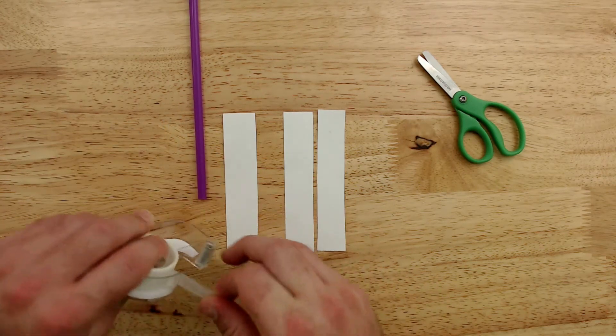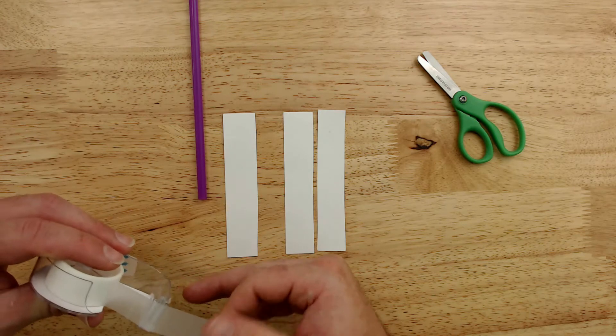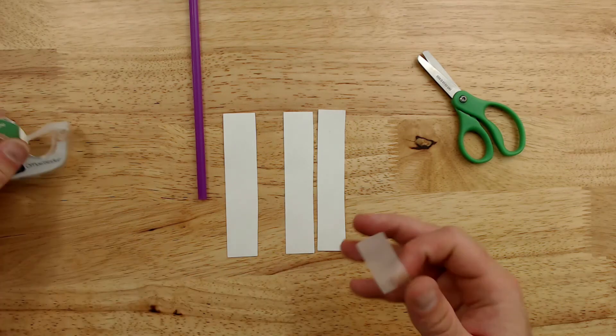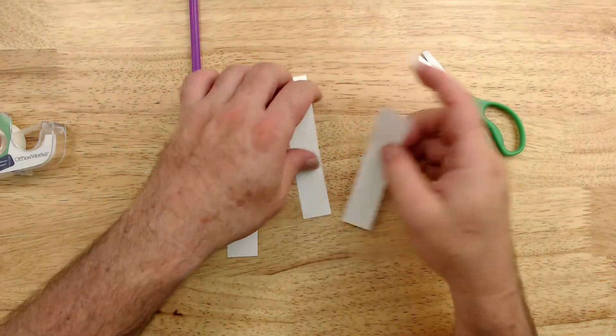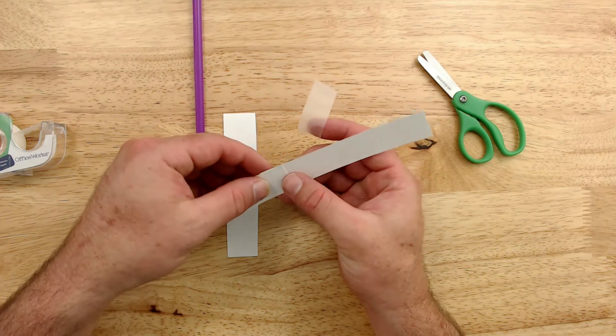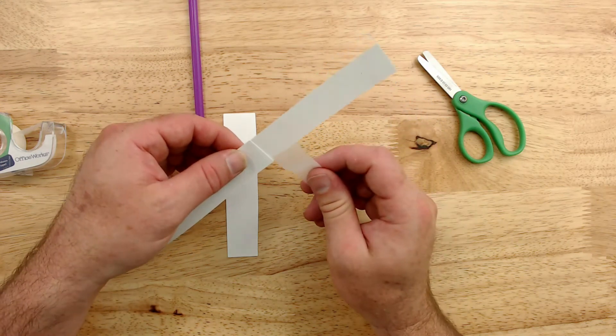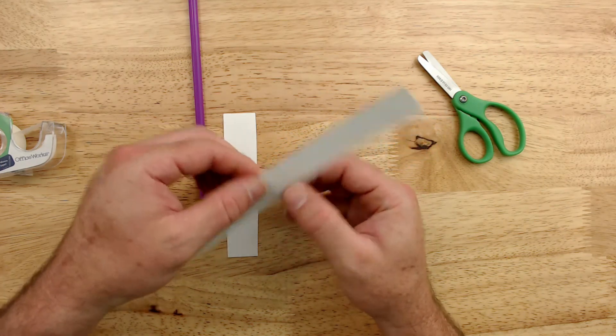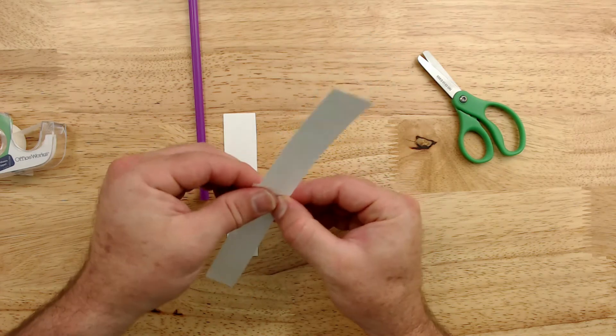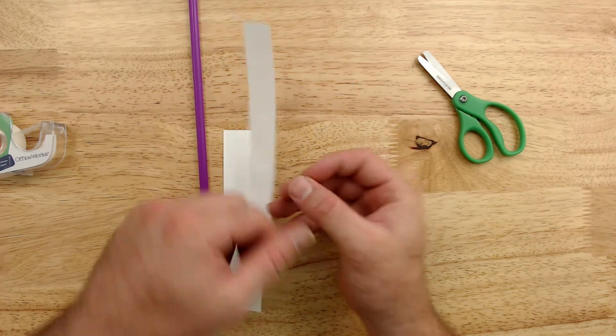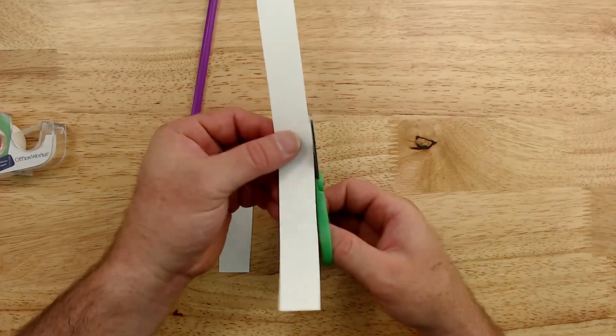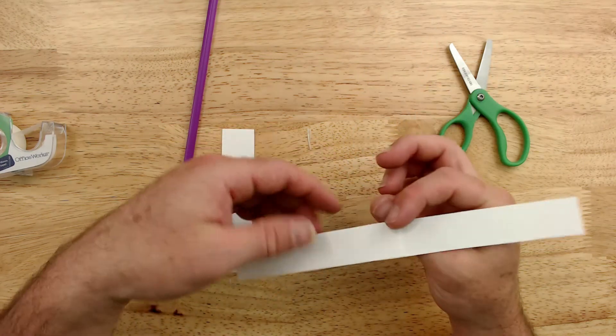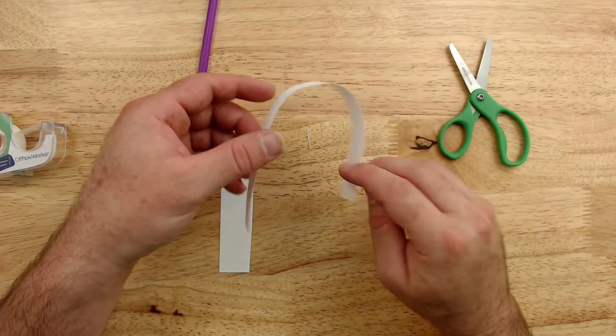When I mean tape them together, I am going to overlap them maybe a half an inch or so, and I am going to put a piece of tape just like so.